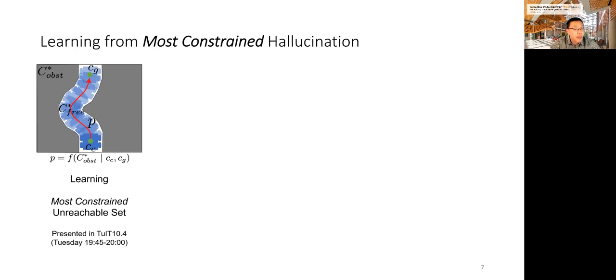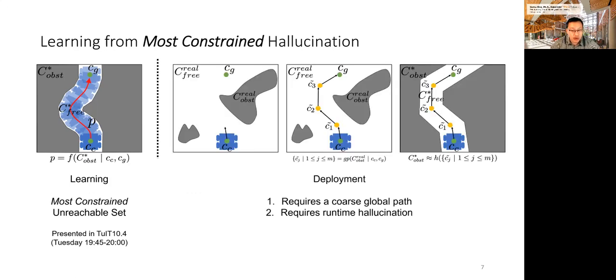However, the downside of this approach is during deployment, because in order to match the deployment scenario with training obstacle distributions, it requires a coarse global path to help generate the most constrained runtime hallucination. Therefore, the most constrained hallucination approach will work only with specific global planners and with a lot of computation to generate the runtime hallucination. Furthermore, always hallucinating the most constrained unreachable set will lead to a very conservative planner. In this work, we relax these two assumptions by a method called Hallucinated Learning and Sober Deployment, or HLSD.